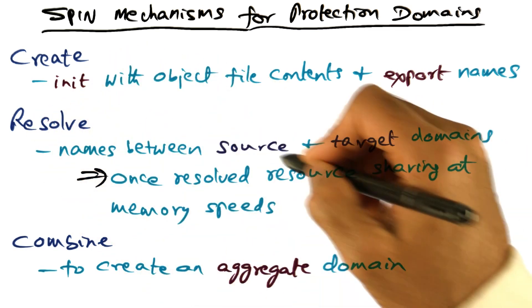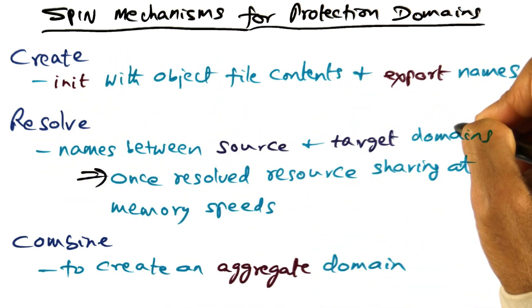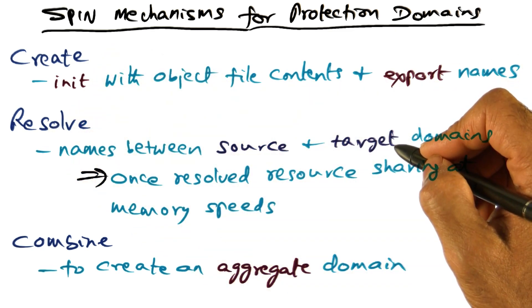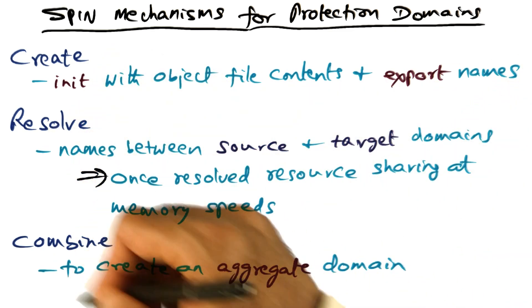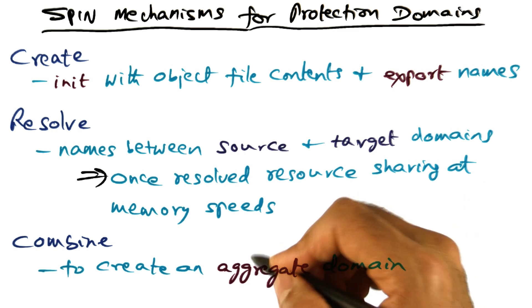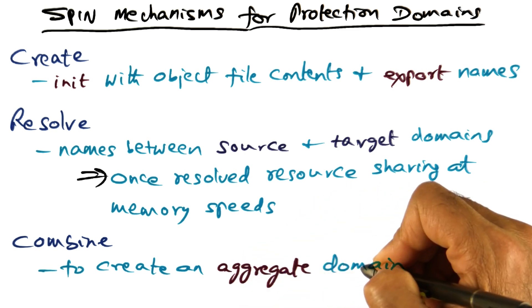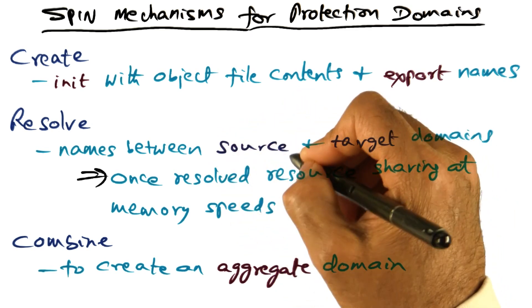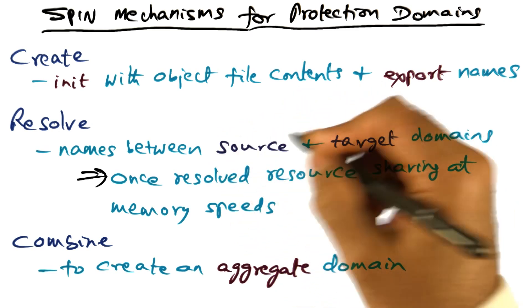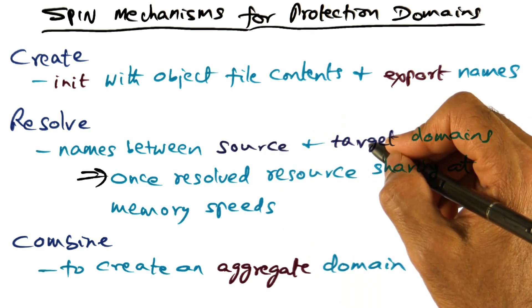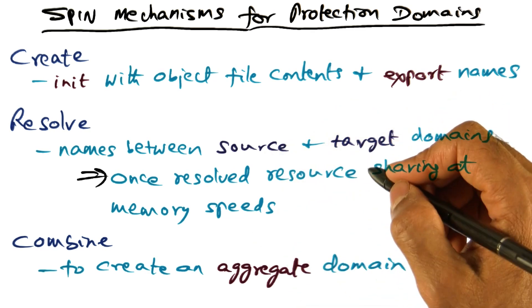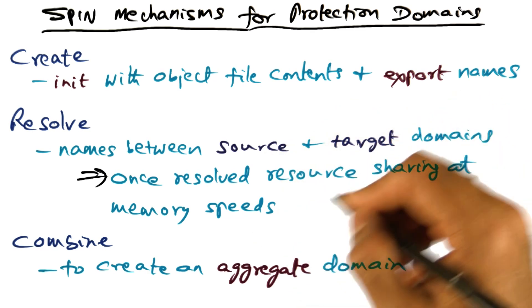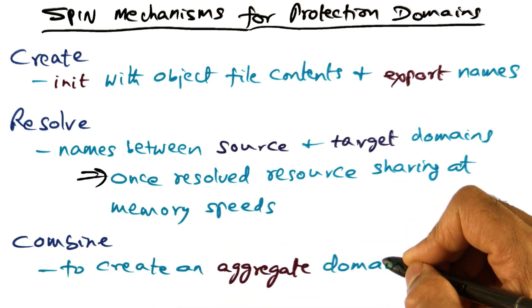Once the names in source and target logical protection domains have been resolved, they can be combined to create an aggregate domain. The aggregate logical protection domain will have entry points, which is the union of the entry points that were exported as names from the source and target, or any number of such domains combined together.